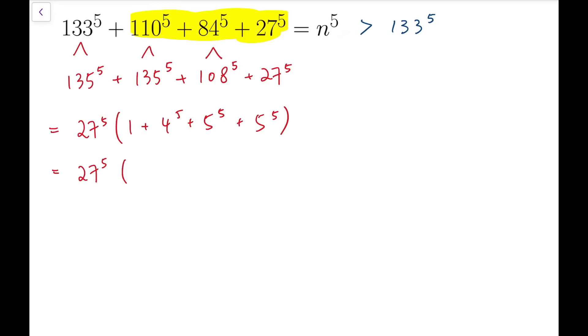And by computing, we have 1 plus 1,024 plus 2 times 3,125. So this sum is equal to 27^5 multiplied by 6,250 added by 1,025, and so that's 7,275.